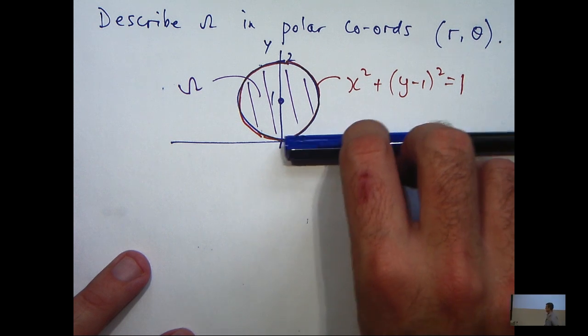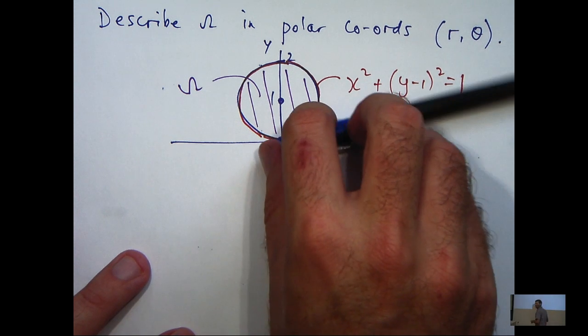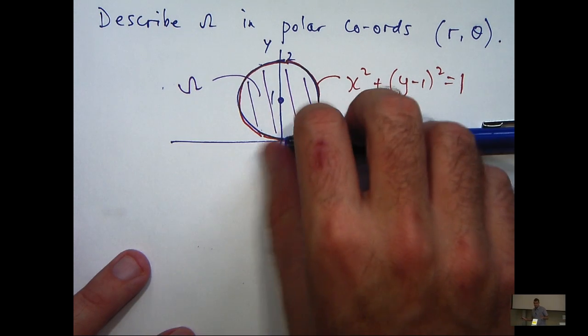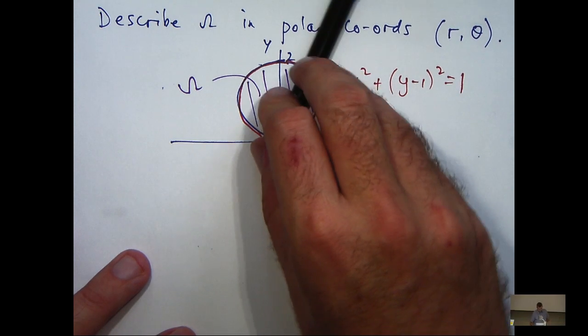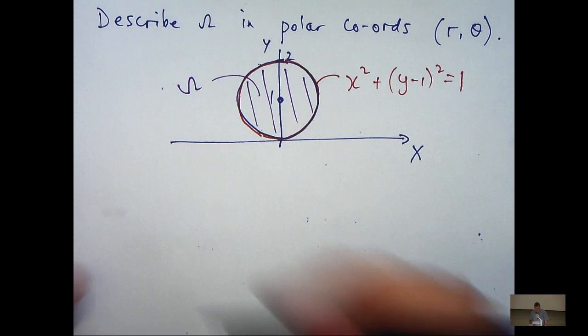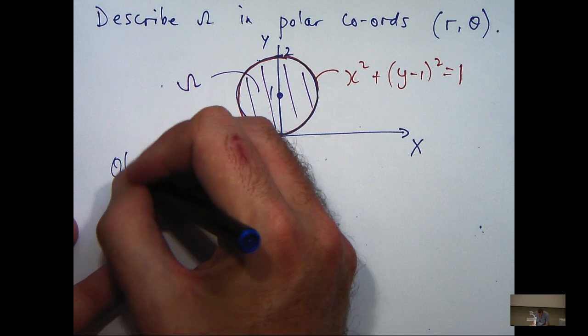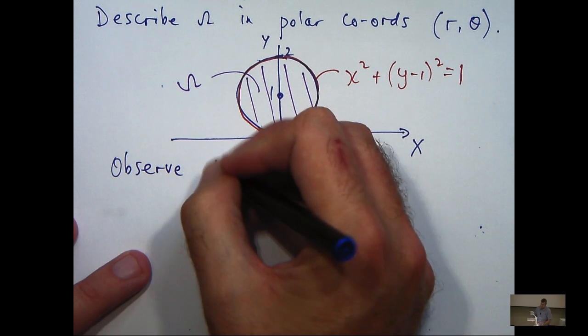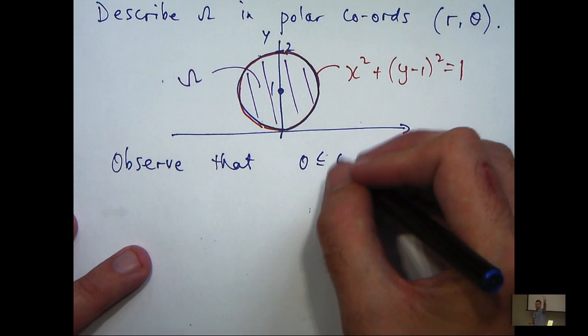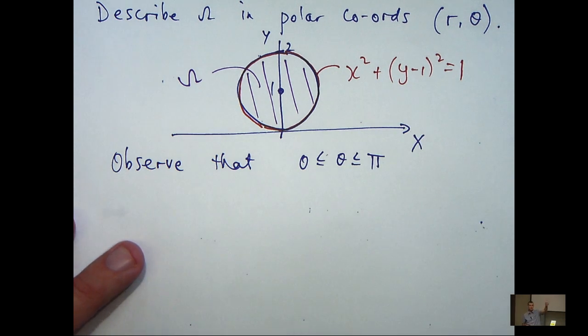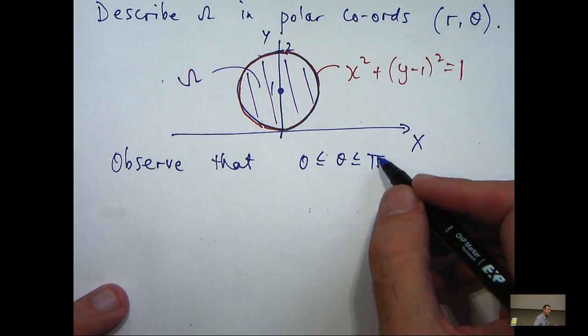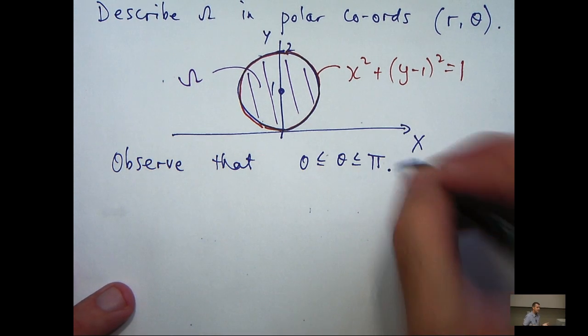If I start along the positive ox axis and I do a half turn, then the region will be completely covered by that half turn. So, the bounds on theta will be 0 and pi because it's a half turn.